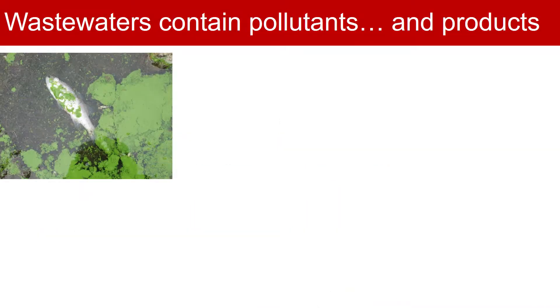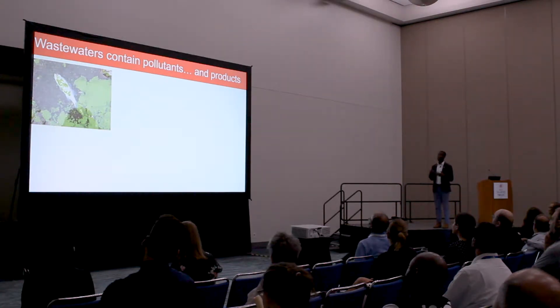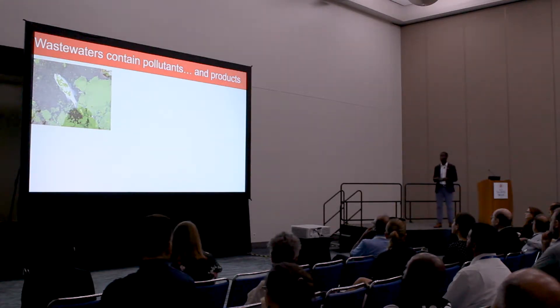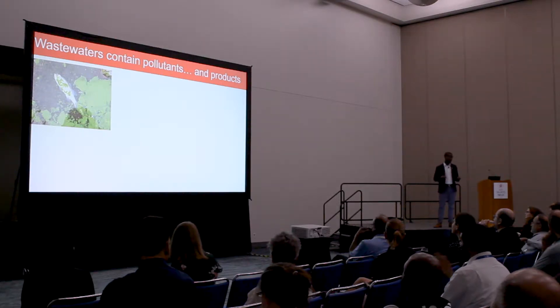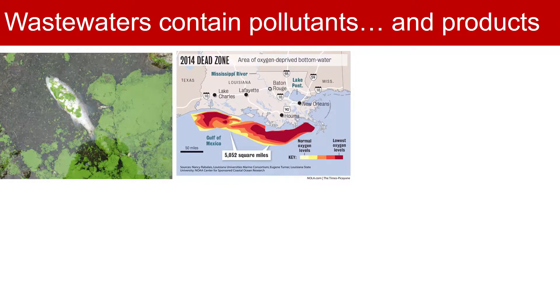Wastewaters get a bad rap because we think about them as containing pollutants, which is absolutely true. Pollutants like nitrogen and phosphorus can cause eutrophication — the production of algal blooms that deplete aquatic systems of oxygen and lead to cascading effects in aquatic ecosystems. One mind-boggling example is that every year in the Gulf of Mexico there's a dead zone, a hypoxic zone, from nutrient runoff all along the Missouri-Mississippi River. That dead zone is the size of New Jersey — 5,000 square miles of low oxygen levels you can actually see from space.